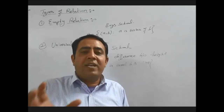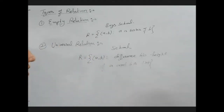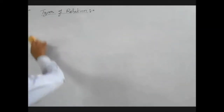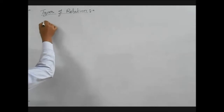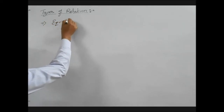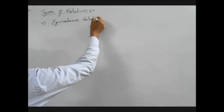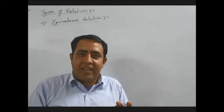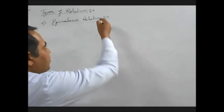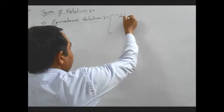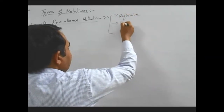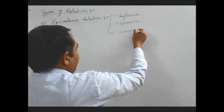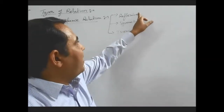Now, the most important relation in this topic is equivalence relation. Any relation is said to be an equivalence relation if it is reflexive, symmetric, and transitive. Meaning, for a relation to be an equivalence relation, the conditions are it must be reflexive, symmetric, and transitive. Now we will study about these three types of relations.